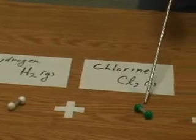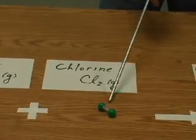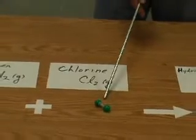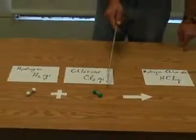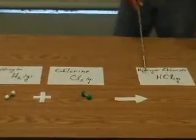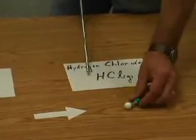Chlorine, similarly, is diatomic. Now, a chemical reaction typically is going to involve old bonds breaking and new bonds forming. When we combine these two substances, we produce a gas called hydrogen chloride, which happens to have the formula HCl, and the molecule looks like that.